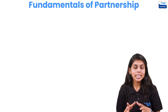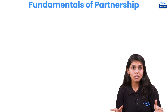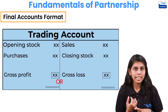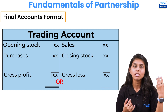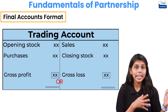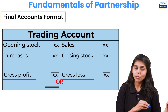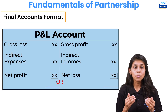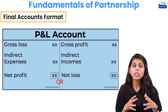In Class 11 we already studied the formats and final accounts of sole proprietorship. In those final accounts, firstly we have a trading account where we put opening stock, purchases less purchase returns, then sales less sales returns, closing stock, and any direct expenses. We get gross profit or gross loss from the trading account, which is transferred to the profit and loss account.